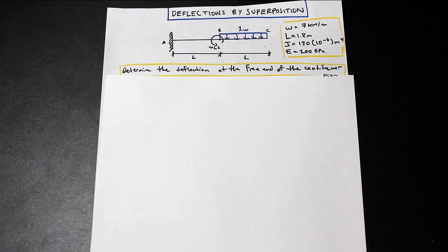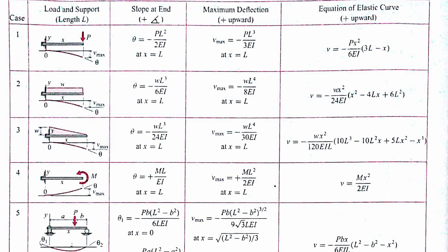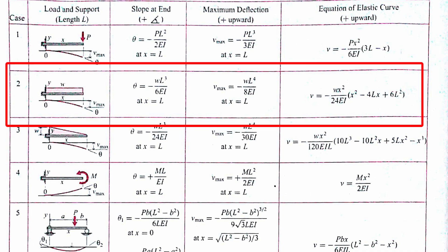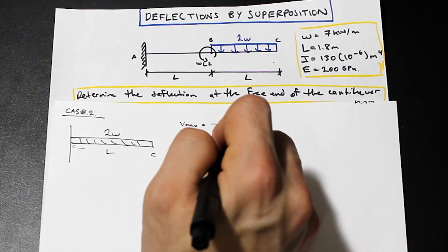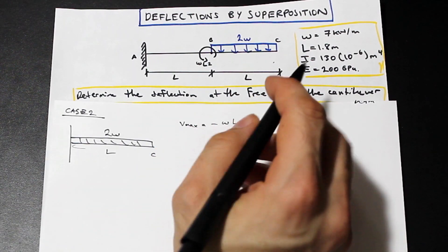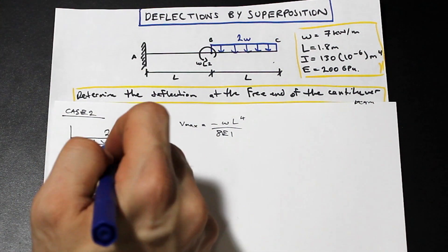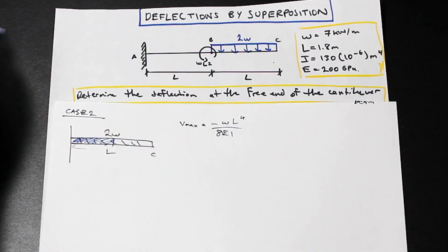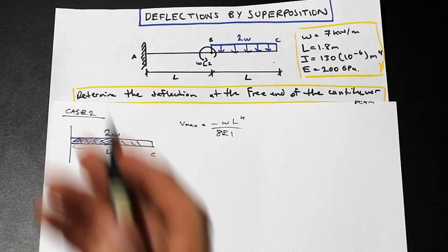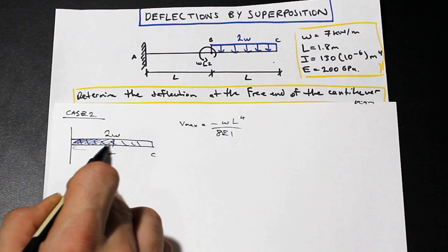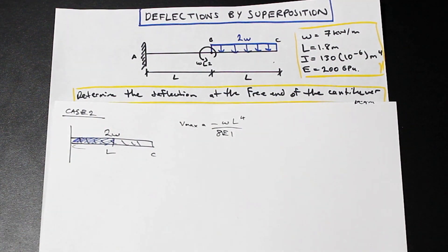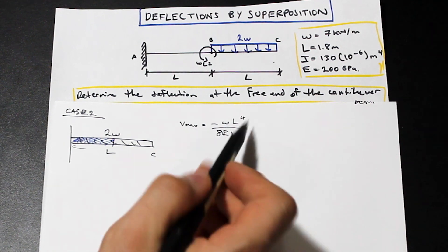We're asked to determine the deflection at the free end of the cantilever, point C. Take a look at the table on screen. We're going to use Case 2 to start. The formula for Case 2 gives the maximum deflection at point C. It's going to be negative because deflection is downward — we're considering down as negative. So it's WL⁴ over 8EI. Now, we have a section of distributed load that doesn't exist on our beam, so in the next step we need to subtract the effect of that loading. We'll do that by applying an upward uniformly distributed load, which will be positive.